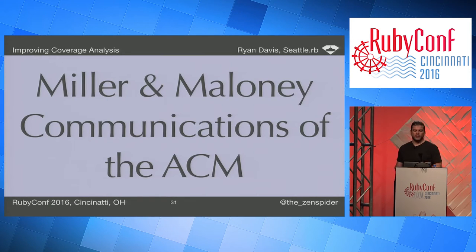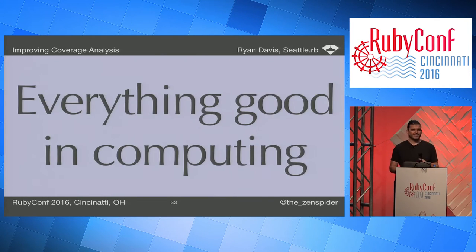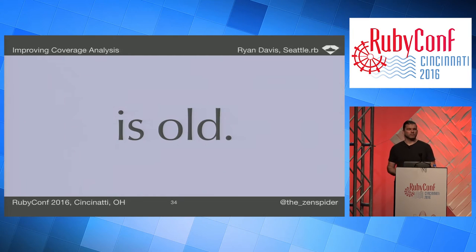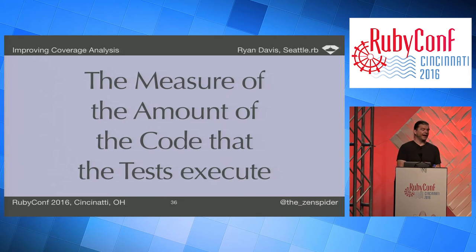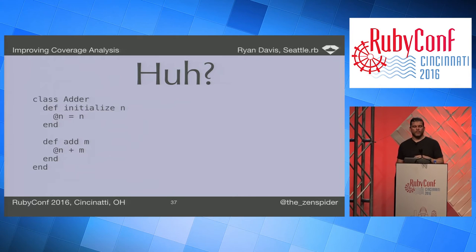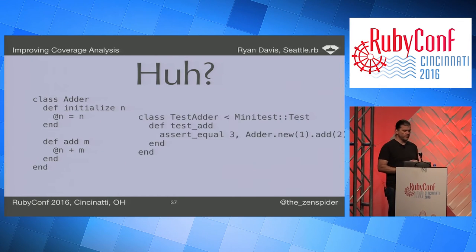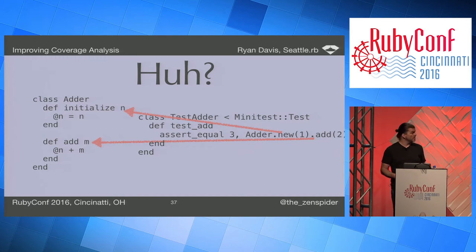So what is code coverage analysis? It was introduced by Miller and Maloney in the Communications of the ACM in 1963 — because everything good in computing is old, like me. In the simplest terms, it's a measurement of how much code your tests actually touch. Given an overtly simple implementation and the tests for it, the test hits both initialize and add, and because there are no branches, that means 100% coverage.